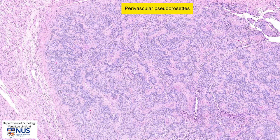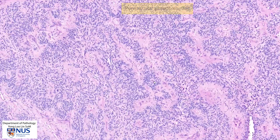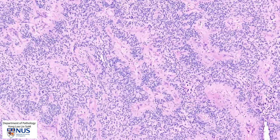We can also appreciate them very clearly here, and we can see that there is a central blood vessel, this pale fibrillary zone, and then the nuclei around it. These are perivascular pseudorosettes.